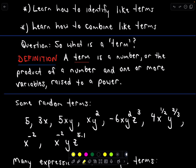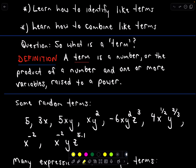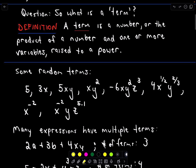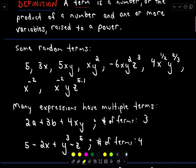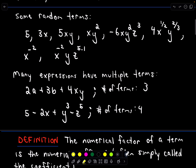So the first thing we want to ask ourselves is: what is a term? A term is a number, or the product of a number and one or more variables raised to a power. So those variables are raised to powers. Maybe it's best to just look at some examples.